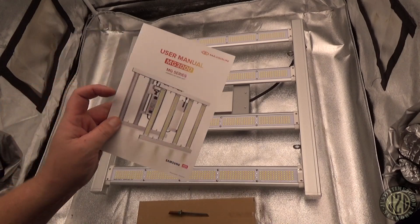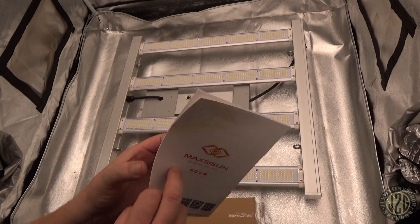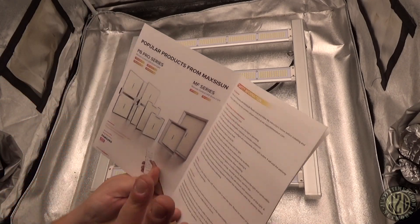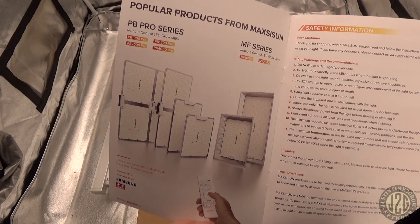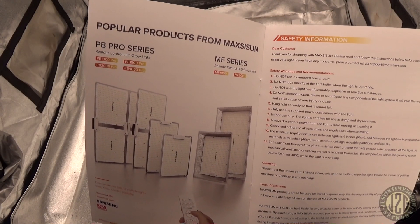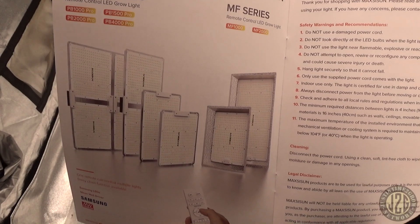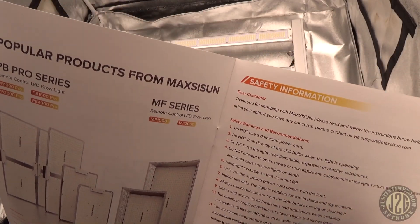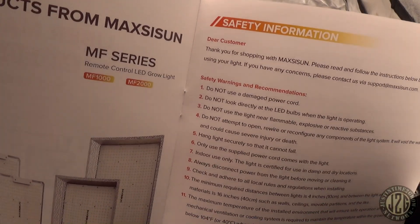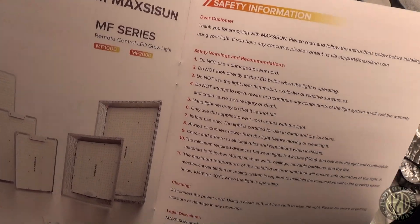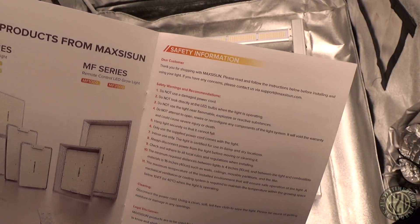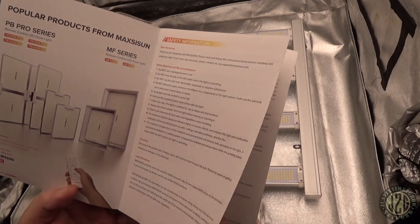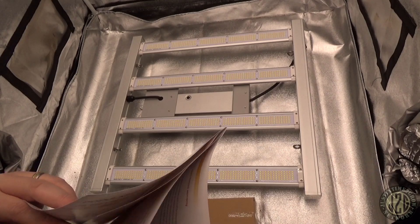We've got the manual here for the MG3000 series. This shows their whole family. They started with the PBs, the Peanut Butters, you guys remember I reviewed those. Then we got the MFs, the Bad MFs. Now we got the MG, so things are moving forward.